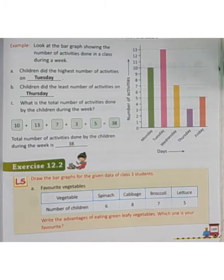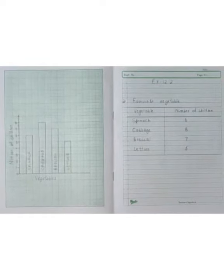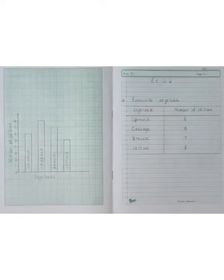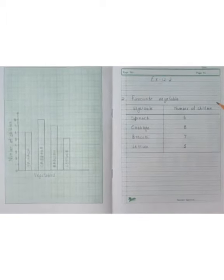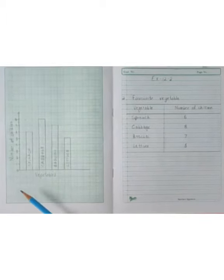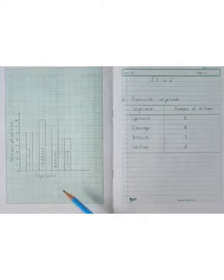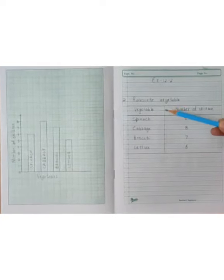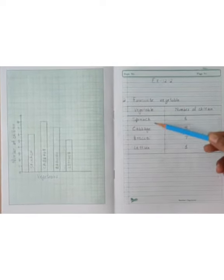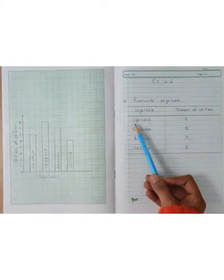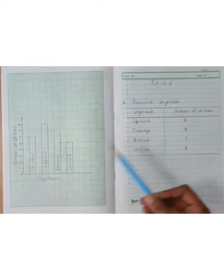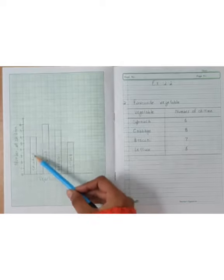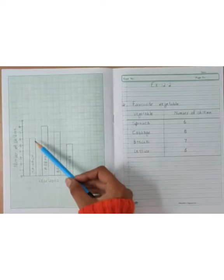Let's start. Here you can see the data and the bar graph. The number of children is on one axis and vegetables on the other. For spinach, we have 6 children, so we will draw a bar up to 6 and write spinach.